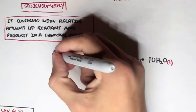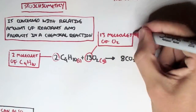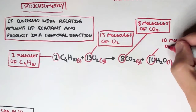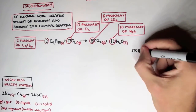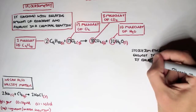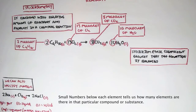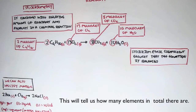Now let's look at each of the reactants and products separately. We have two molecules of butane gas, 13 molecules of oxygen gas, 8 molecules of carbon dioxide, and 10 molecules of H2O. The stoichiometric coefficients in front of each element ensure that the equation is balanced. We use the coefficient and the small numbers beside each element on the bottom — this small number tells us how many elements there are in that compound. By multiplying the coefficient by the small number on each element, this tells us how many elements in total there are.